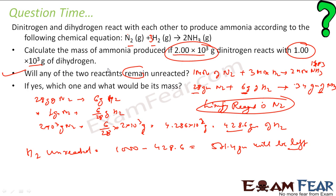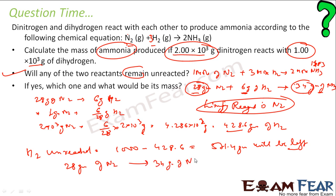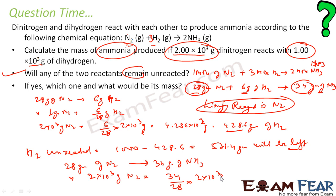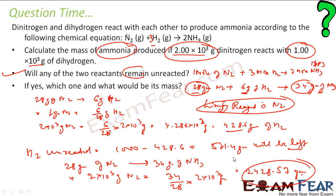Since nitrogen is the limiting reagent, we work on nitrogen to find mass of ammonia. 28 grams of N₂ gives 34 grams of NH₃. So 2000 grams of N₂ will give 34/28 × 2000 = 2428.57 grams of ammonia.